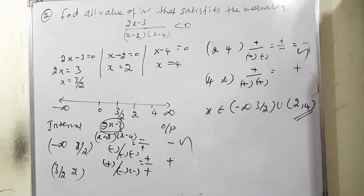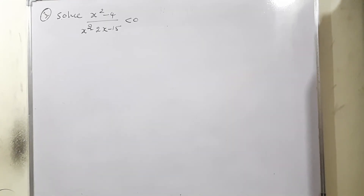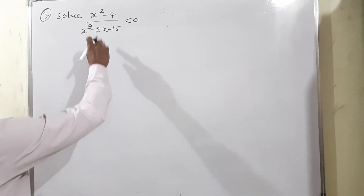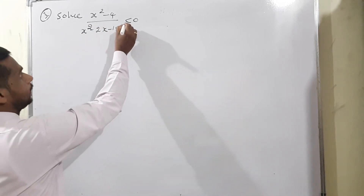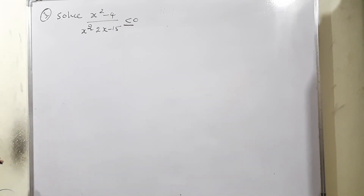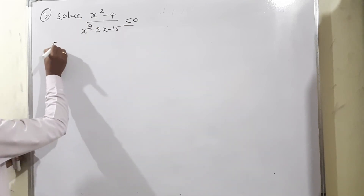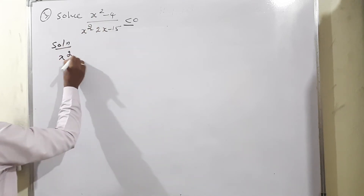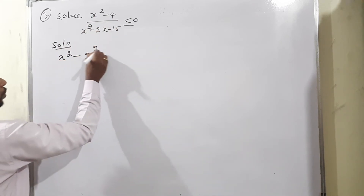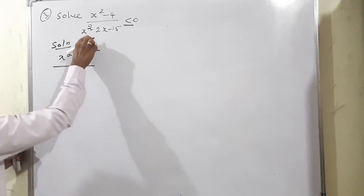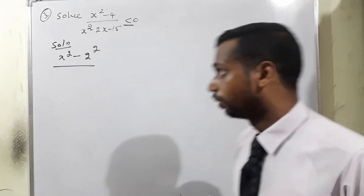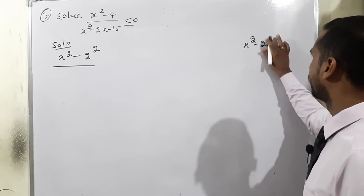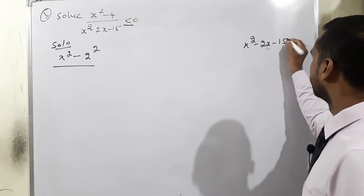Question 3 from exercise 2.3: (x²-4)/(x²-2x-15) ≤ 0. The numerator x²-4 = (x+2)(x-2). For the denominator x²-2x-15: product is -15, sum is -2. Choosing -5 and +3 since (-5)(3)=-15 and -5+3=-2.